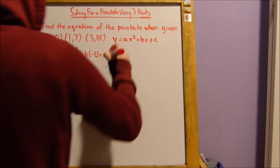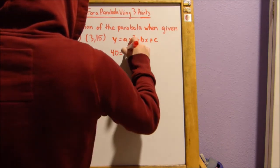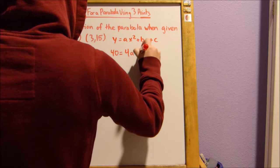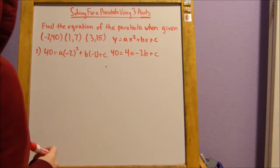Now let's simplify that out. 40 equals 4a minus 2b plus c. So that's going to be our first equation in the matrix.